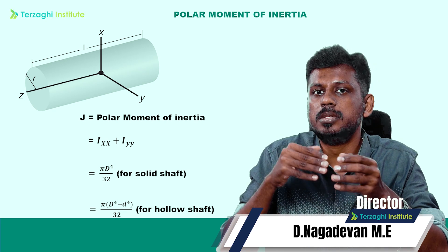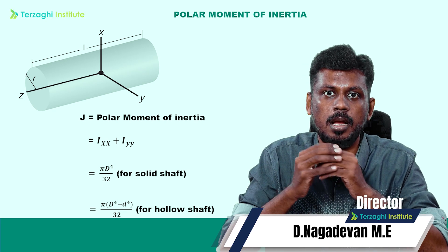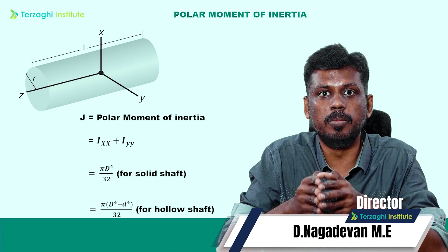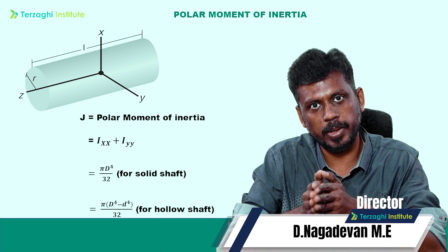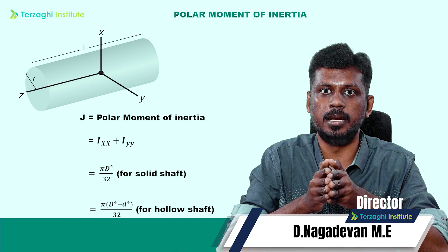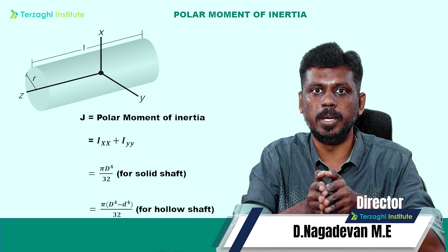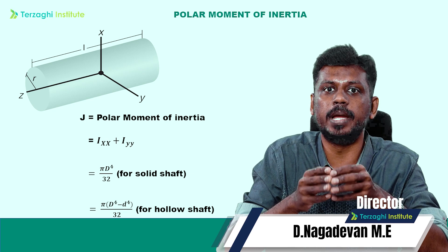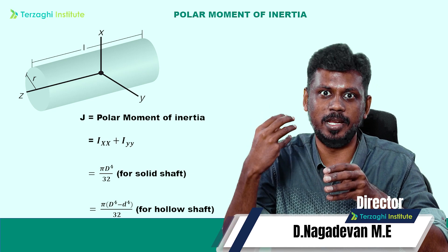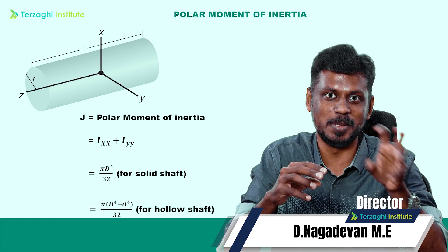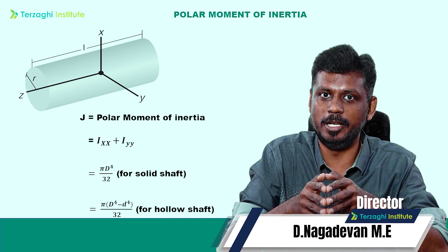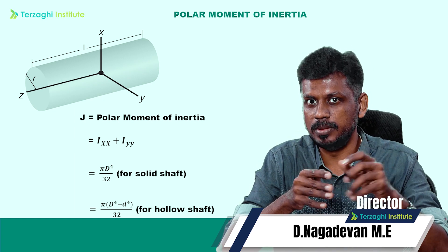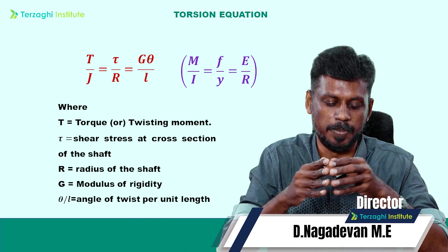The polar moment of inertia J is IXX plus IYY. So πD⁴/64 plus πD⁴/64 equals πD⁴/32. This is our polar moment of inertia for a solid circular shaft. In the torsion equation T/J, T is the torque and J is the polar moment.